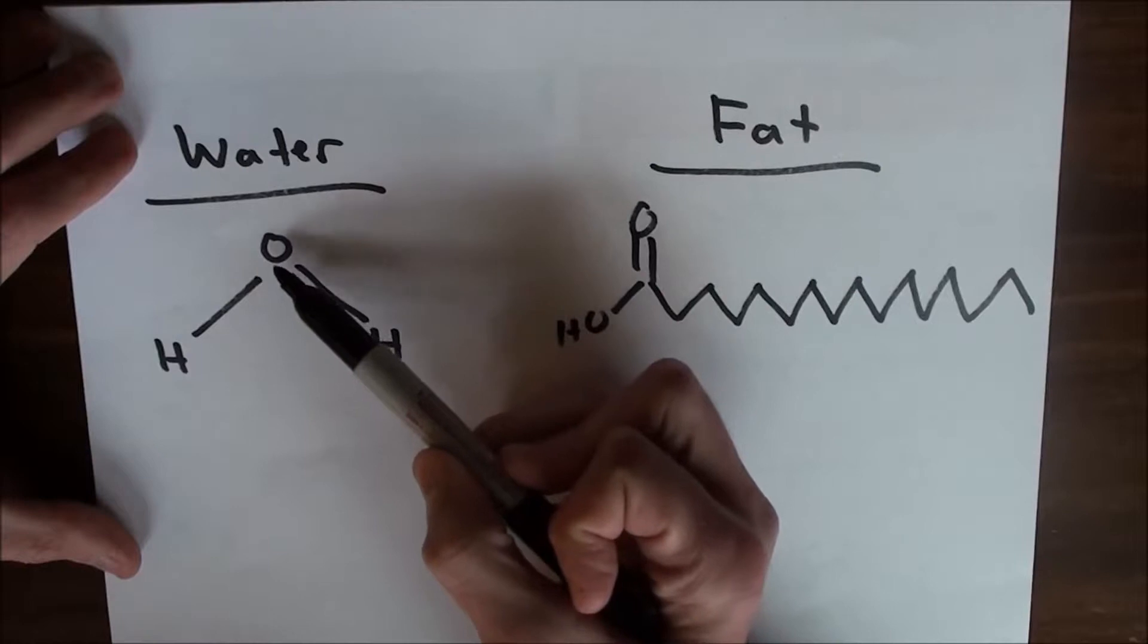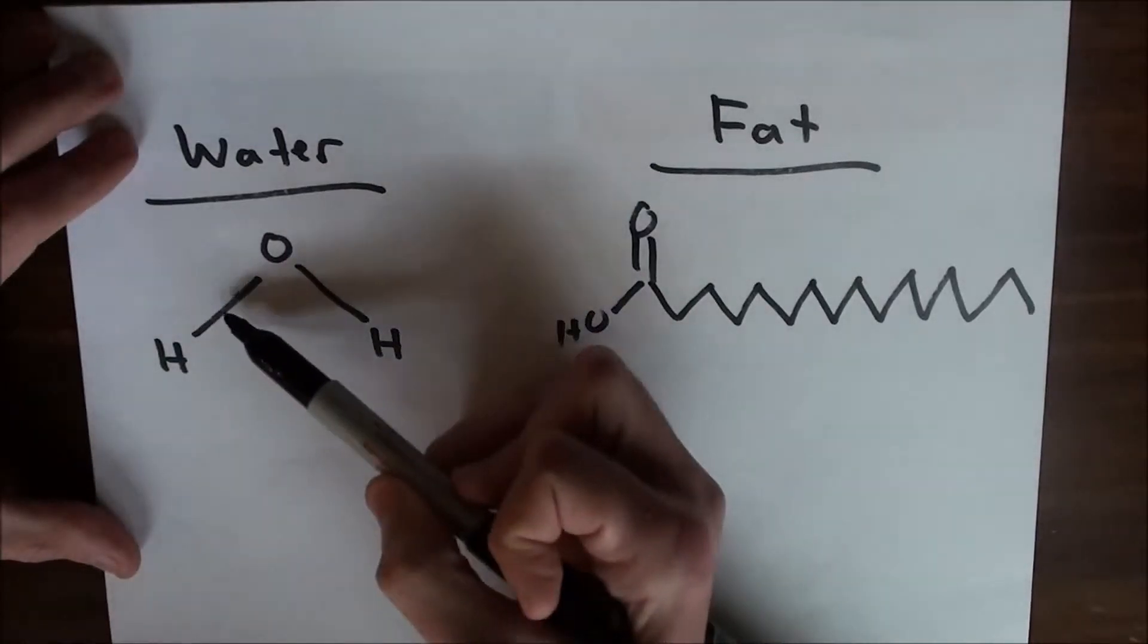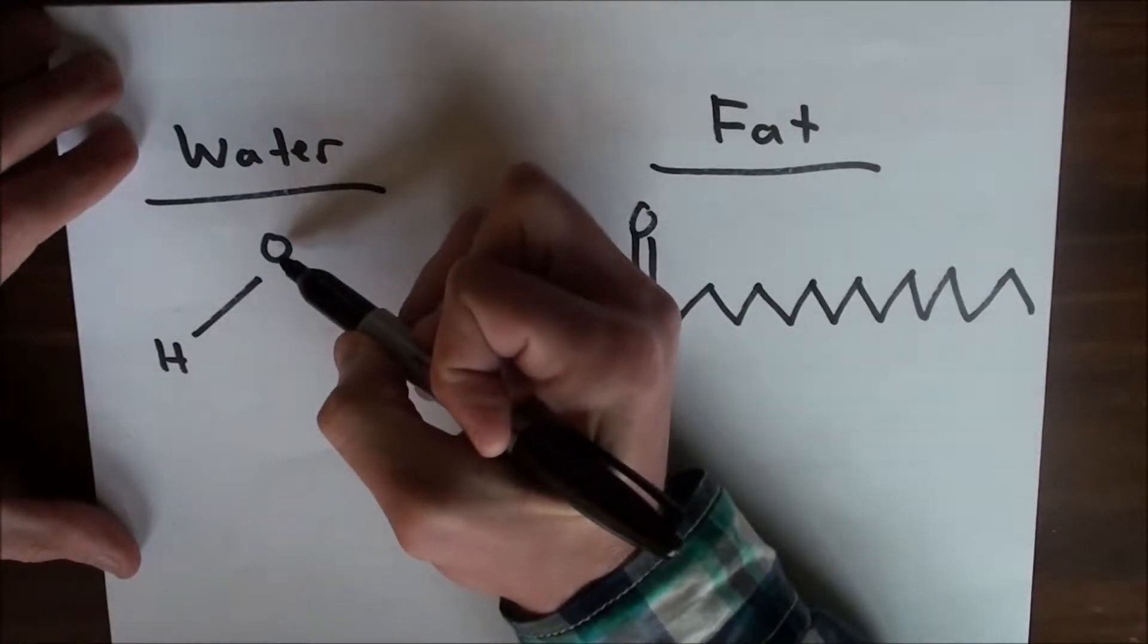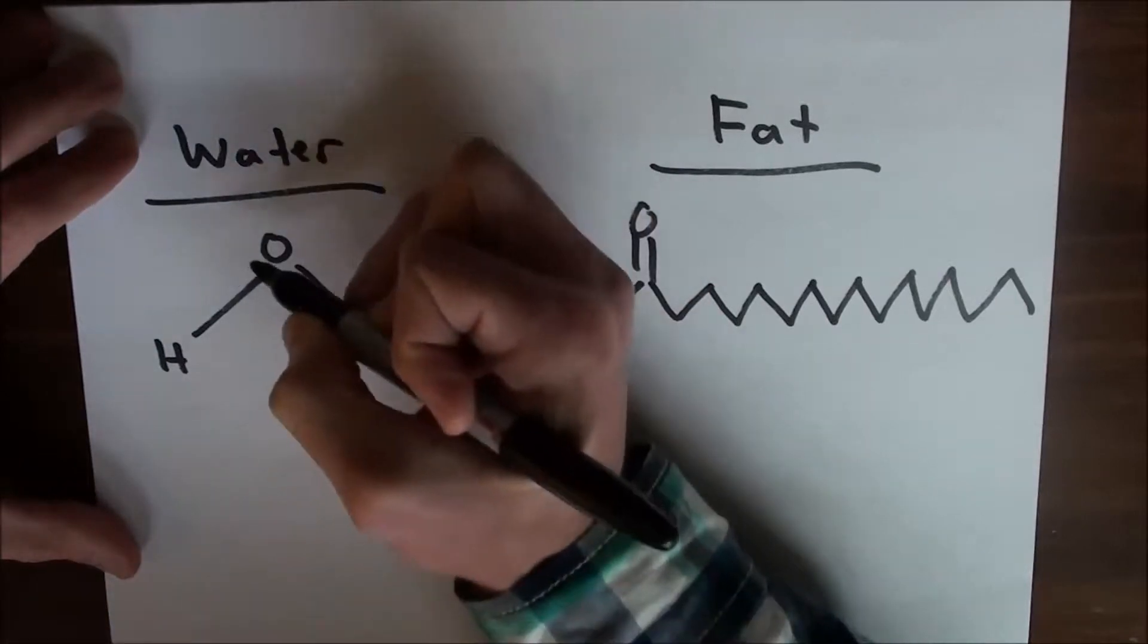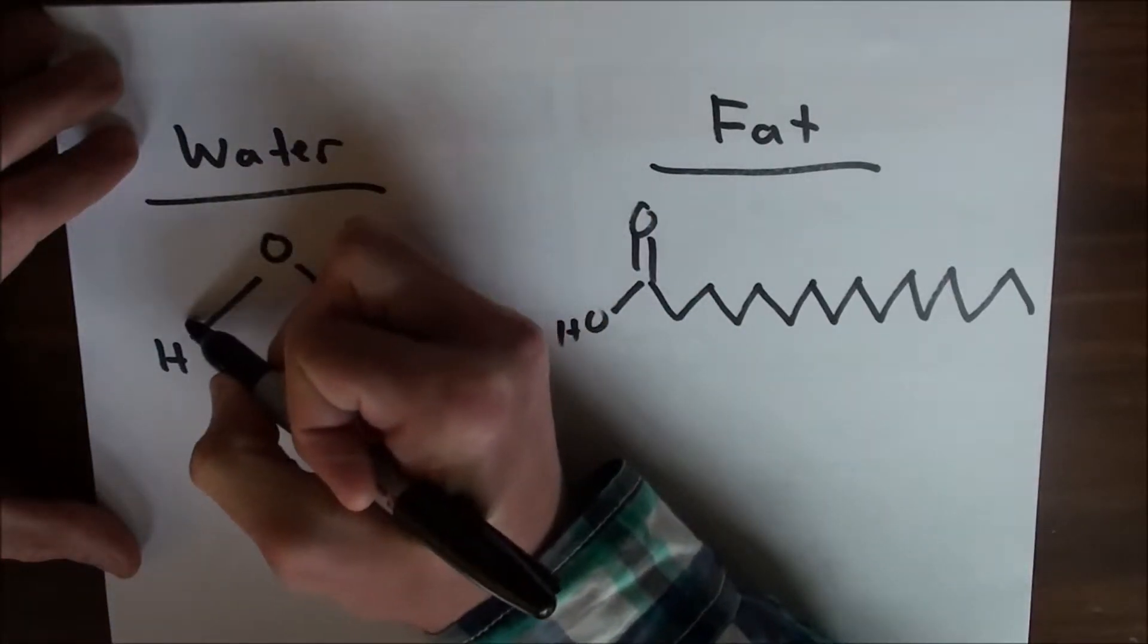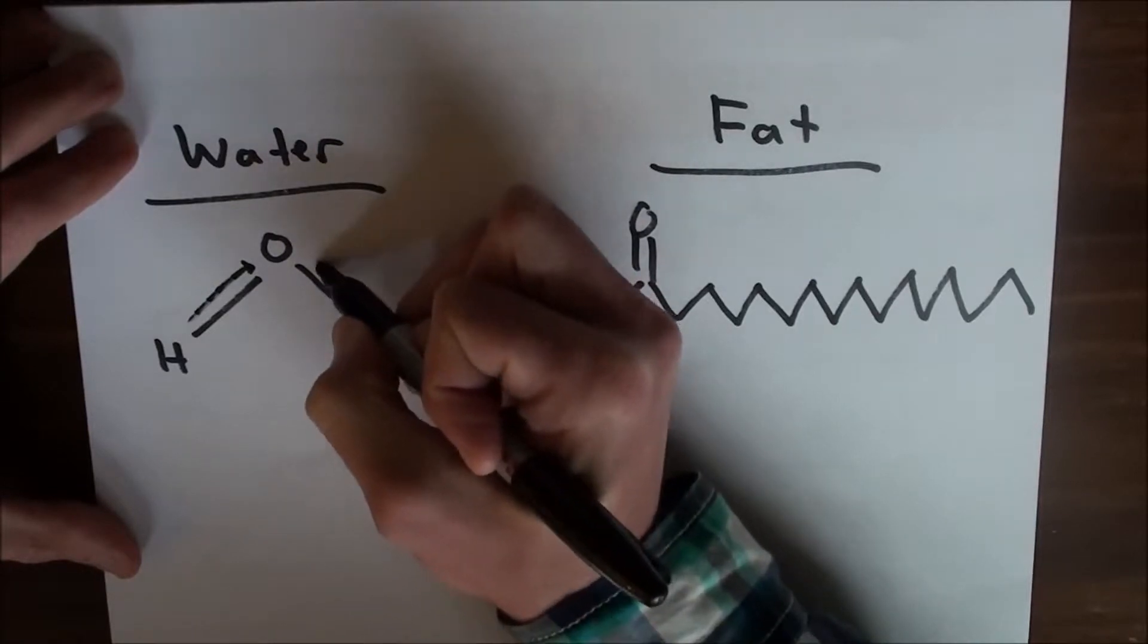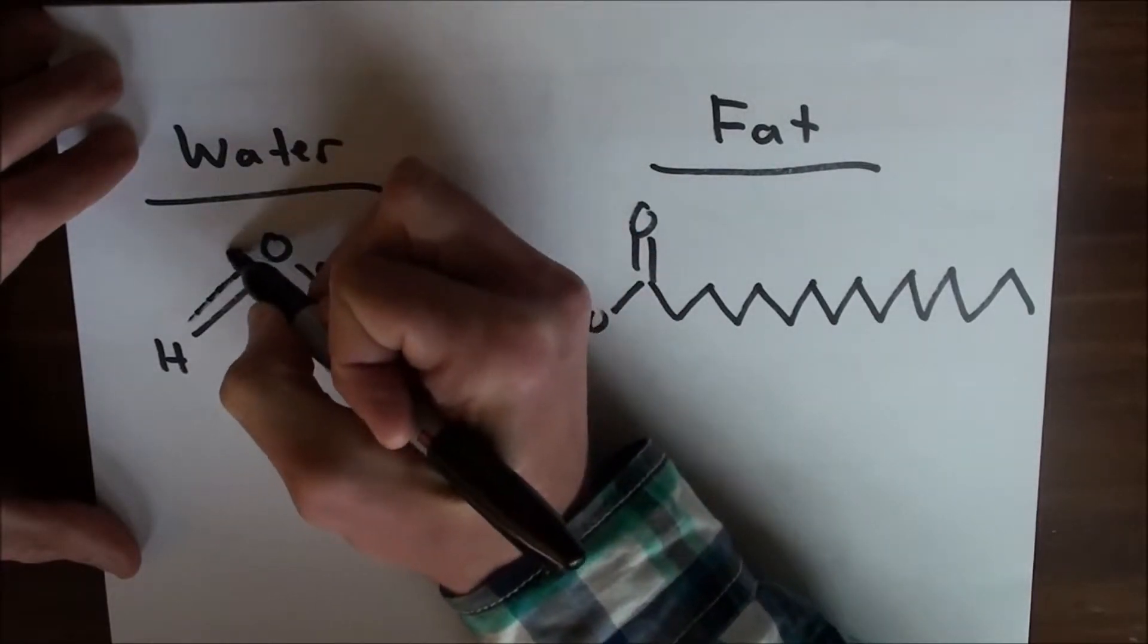So in the water molecule, we have this bond between oxygen and hydrogen that's made by sharing of electrons. But as it turns out, oxygen actually has a pretty strong pull on the electrons more so than hydrogen. And so effectively, the electron spends more time closer to this oxygen than it does to this hydrogen, which makes this end slightly negative.